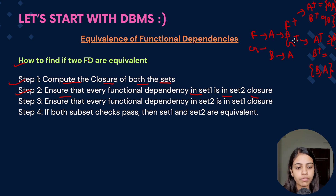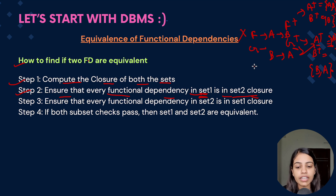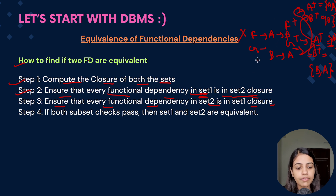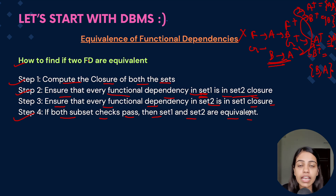After computing closures, Step 3 is to check whether every functional dependency in set F is present in the closure of set G. For example, we check whether A→B holds using the closure of A in G — if A in G's closure can only determine itself and not B, then the relations are not equivalent. Step 4: if both subset checks pass — every FD in F holds in G's closure, and every FD in G holds in F's closure — then the two sets are equivalent.